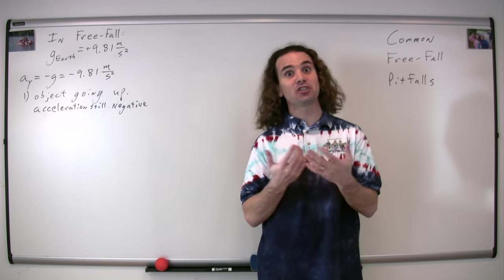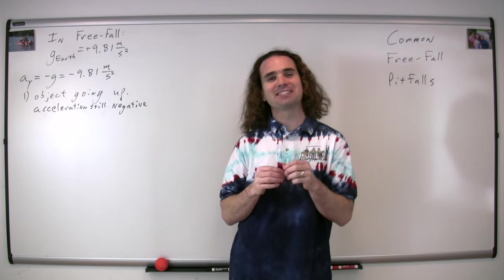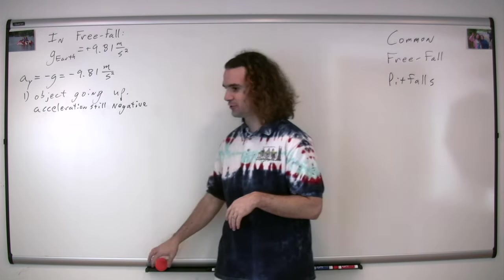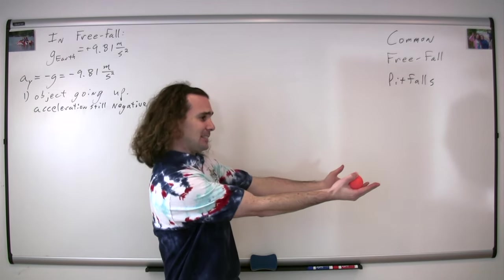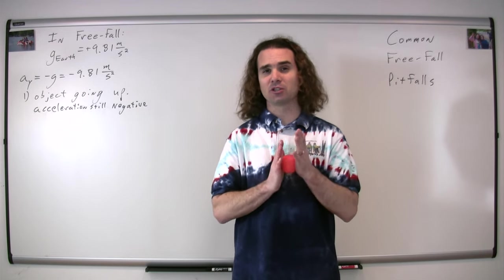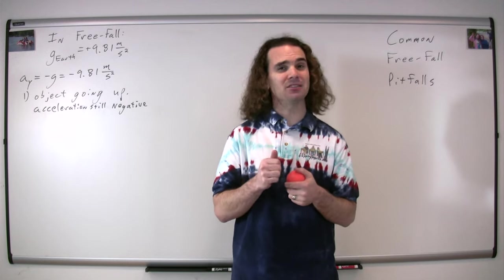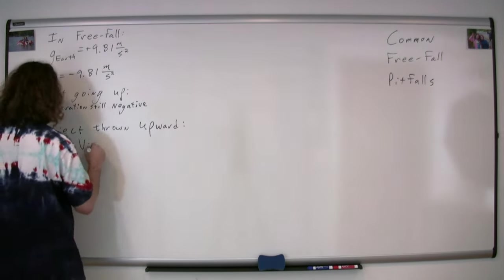Sometimes students tell me that the initial velocity for an object being thrown upward is zero. I love this because then I get to show an object being thrown upward with the initial velocity of zero. Watch. See, it won't go anywhere. Right. An initial velocity of zero will not cause an object to move upward. In fact, the initial velocity in the y direction must be positive in order for an object to move upward.